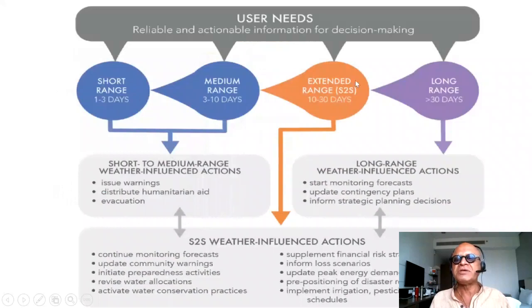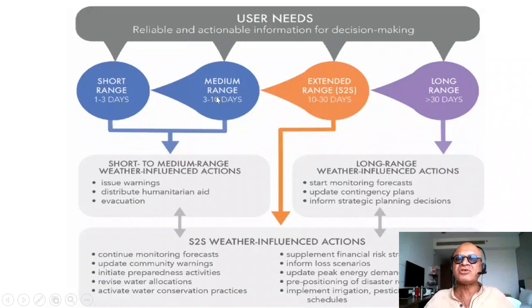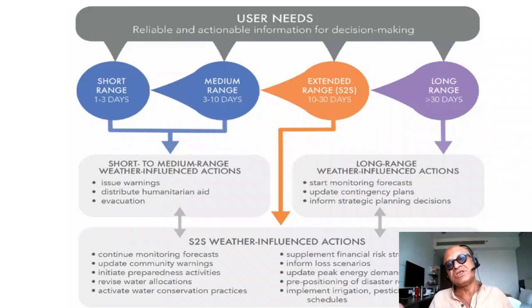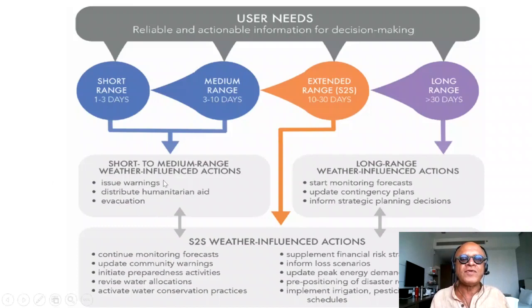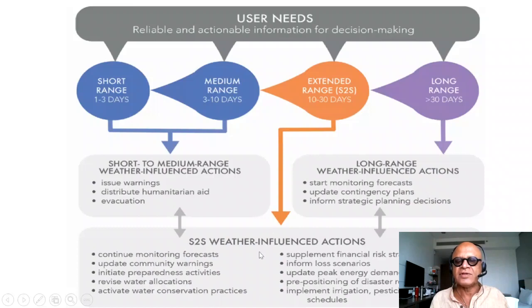There are various sectors at S2S (sub-seasonal to seasonal) timescales, which include short range, medium range, extended range, and long range. The skill of predictions at these timescales depends on mid-latitudes, where systems can be large-scale and linger for 10 days, whereas in the tropics they are fast-evolving convective systems. Within that you have the Madden-Julian oscillation organized on sub-seasonal timescales and ENSO on seasonal timescales. These lead to various weather-influenced actions like warnings, distribution of humanitarian aid, evacuation, monitoring forecasts, and updating contingency plans.